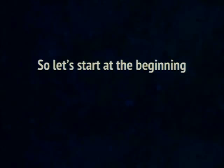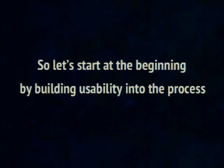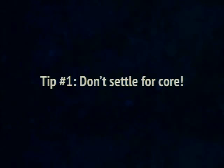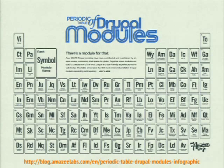The first tip is: don't settle for core. We all know on a technical level that core doesn't provide everything you need. There are so many contrib modules that can improve the editor experience, and oftentimes it's a simple case of installing and enabling them. I'm going to show you a few that we use as a kind of base build for our projects — here's a quick list and then I'll run through them one by one.